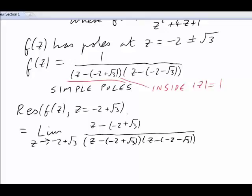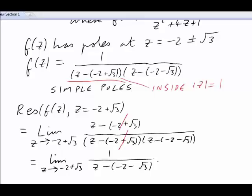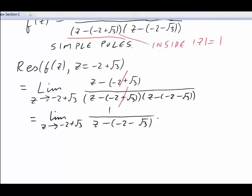Can you see that the top cancels with one of the factors on the bottom? That leaves us with the limit as z approaches minus two plus root three of one over z minus negative two minus root three. The cancellation has got rid of the dangerous term underneath and we can now substitute the value of z and evaluate the limit. It's just one over negative two plus root three subtract negative two minus root three. The negative twos cancel and the root threes add up, so that makes one over two root three.